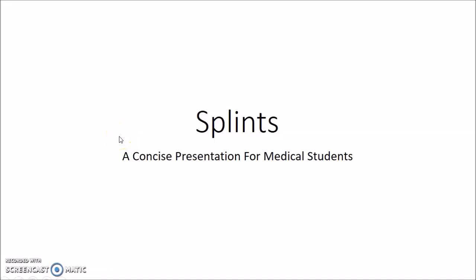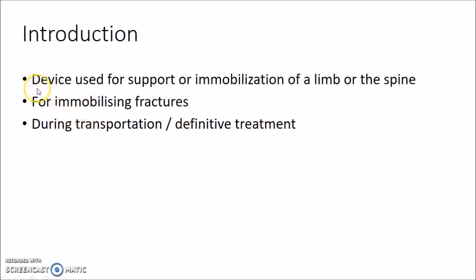Hello guys, this is Sindhir Medico and in this video we are going to see about splints. This is a concise presentation for medical students. A splint is a device used for support or immobilization of a limb or the spine. Splints are basically used for immobilizing fractures. They can be used either during transportation or as definitive treatment.